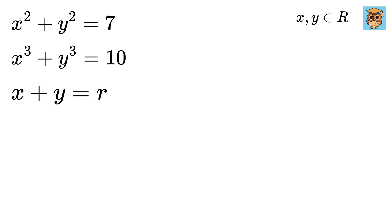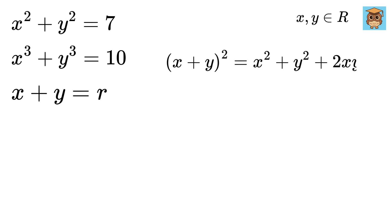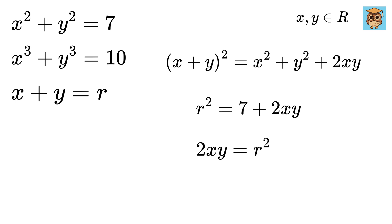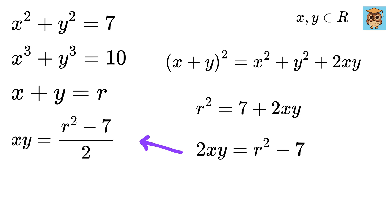Let x plus y equal r. We know that x plus y whole square equals x squared plus y squared plus 2xy. Substituting x plus y as r and x squared plus y squared as 7, we get r squared equals 7 plus 2xy. This gives xy equals r squared minus 7 over 2.